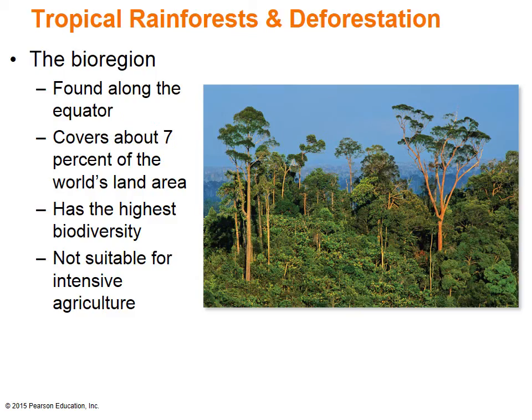Tropical rainforests can be found around the equator in the AF climate region. This region has high average annual temperatures, abundant sunlight, and a lot of rainfall occurring throughout the year. With more than 50% of the world's known plant and animal species living in tropical rainforests, that makes it the bioregion with the highest biodiversity. These areas, unfortunately, are not suitable for agriculture because so little sunlight reaches the forest floors. Since the forests are so thick and dense, most of the sunlight only hits the massive treetops, and most of the nutrients found in the soils are absorbed by the extensive tree root system.